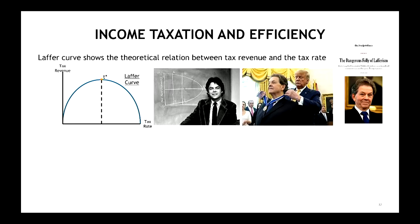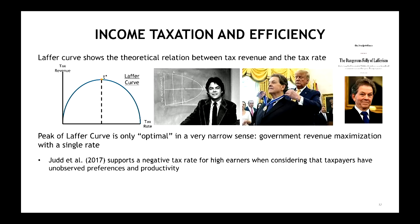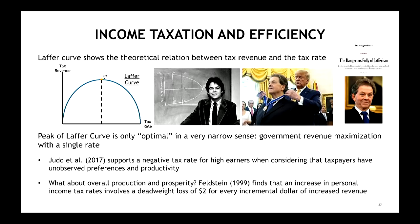I actually have some trouble with Lafferism. The Laffer curve is only optimal in a very narrow sense — it tells you what would maximize government revenue with a single tax rate. The real problem is what about overall production and prosperity? Getting to the top of the Laffer curve involves so much discouraged economic activity and lost prosperity. Research shows that for every dollar of increased government revenue, there's a deadweight loss of $2 in the economy.